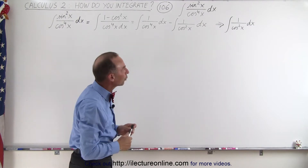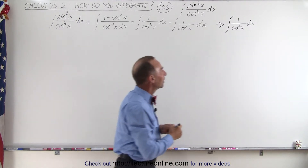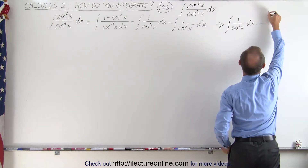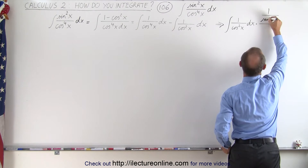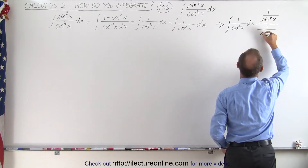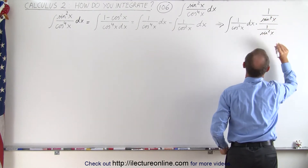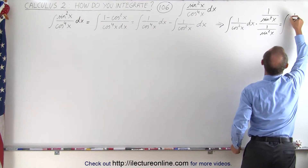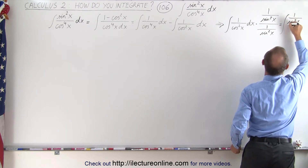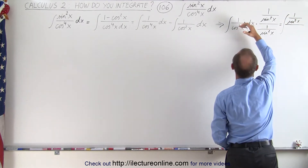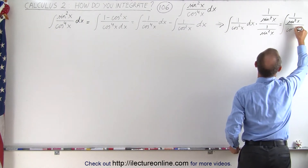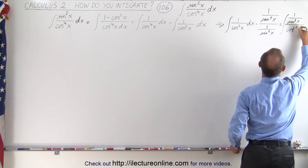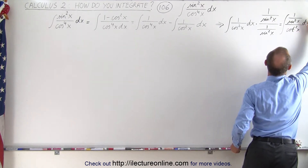Let's start with 1 over cosine squared of x. The trick here is to multiply both the numerator and the denominator by 1 over sine squared of x, in such a way that this becomes the integral of 1 over sine squared of x divided by — cosine divided by sine is the cotangent — so this becomes the cotangent squared of x dx.